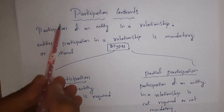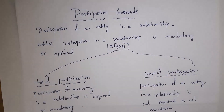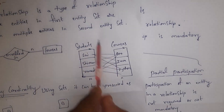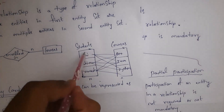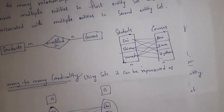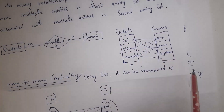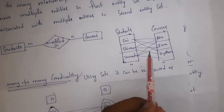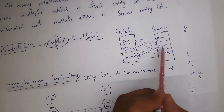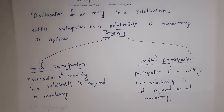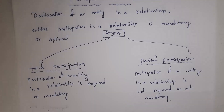Next, I will explain participation constraints. Participation of an entity in a relationship is known as a participation constraint. For example, in the student entity set, entity Sai participated in Java and entity Shiva participated in C++ and so on. Participation of an entity in a relationship can be either mandatory or optional. If mandatory, each and every student must select courses; if not mandatory, some students may or may not select a course. If participation is mandatory we call it total participation, and if not mandatory we call it partial participation.